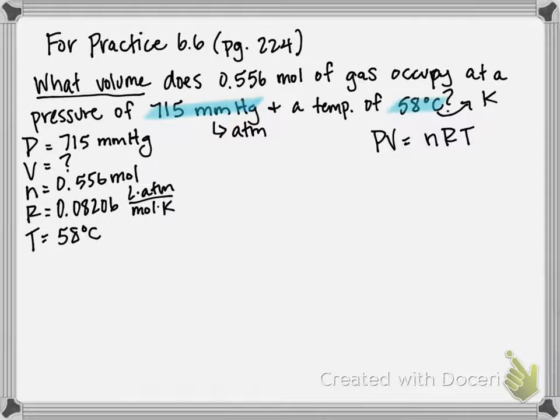So I'm going to start with my temperature. To convert Celsius to Kelvin, we add 273.15. And when I perform this conversion, I get 331.15 K.